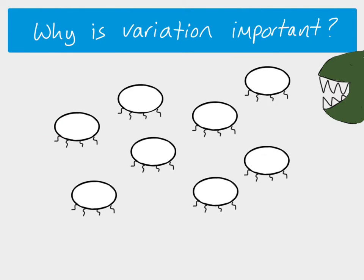In our situation here, all of our individuals are the same — there's no variation in terms of their color. They've got the same color phenotype, which means the predator isn't able to see them. Not only does this individual survive, but so do all the others. Sometimes having no variation can actually be an advantage in an environment.